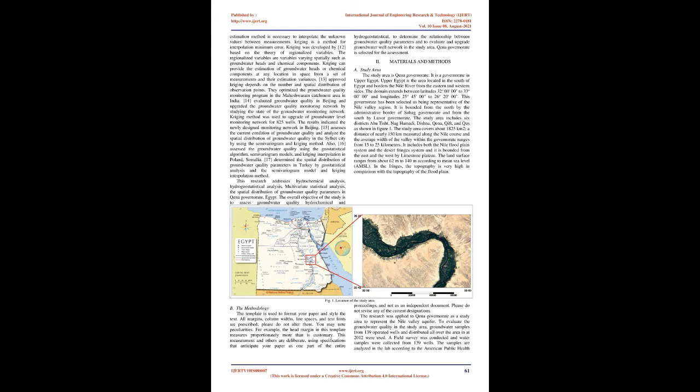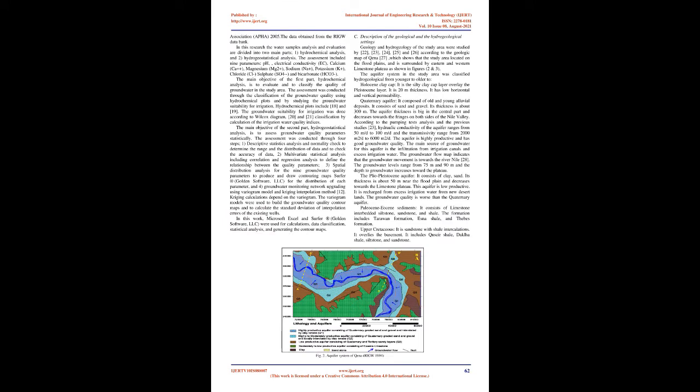Studies 5, 6, 7, and 8 evaluated groundwater quality hydrochemically by using hydrochemical characteristics evaluation using Piper, Stiff, Gibbs, and Wilcox diagrams, and studied the suitability of groundwater for irrigation in India, Iraq, Sahag, and Cameroon respectively. For hydrogeostatistics analysis, multivariate statistical analysis was used. Multivariate statistical analysis is used to analyze, predict, and study the relationship between several variables. It includes basic statistics, correlation, regression analysis, analysis of variance, and principal component analysis. Multivariate analysis is used in the water quality field, waste management, business, and sales data. Studies 9 and 10 used multivariate statistical analysis and principal component analysis for groundwater quality assessment.